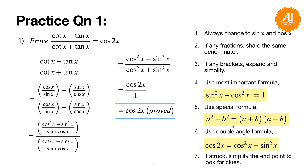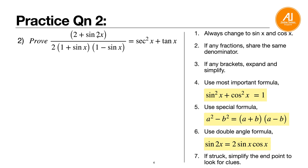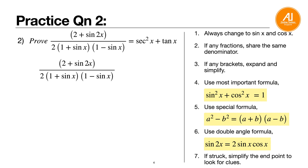Question two: prove (2 plus sine 2x) over [(1 plus sine x)(1 minus sine x)] equals secant squared x plus tangent x. Notice (1 plus sine)(1 minus sine) is the a squared minus b squared pattern — simplify that. Sine 2x is a double angle; since the final answer is in single angle, change sine 2x to 2 sine x cosine x. The denominator (1 plus sine)(1 minus sine) becomes 1 minus sine squared x.